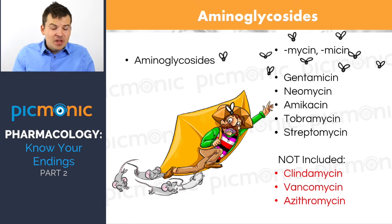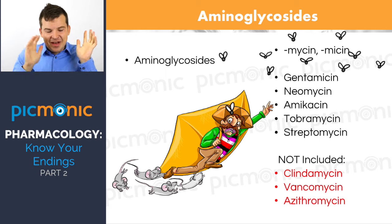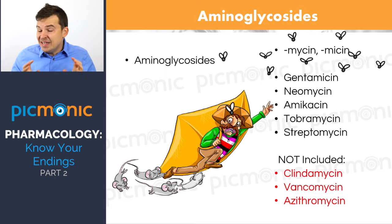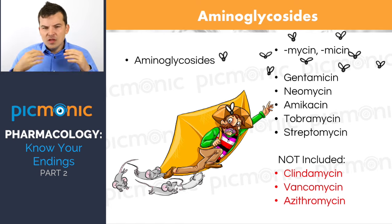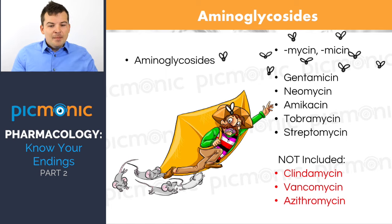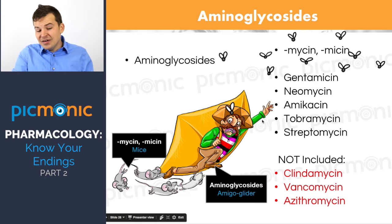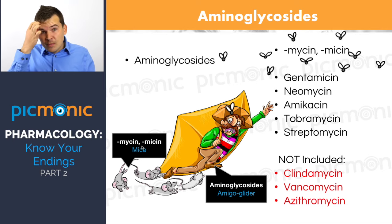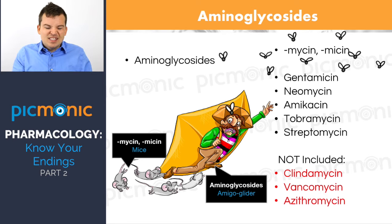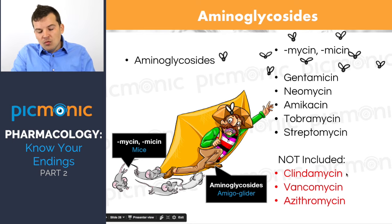The next class is aminoglycosides. A lot of students freak out when asked to name them, but they're actually easy to remember. When I say aminoglycosides, the first thing you should think about is 'mycin' — spelled with a Y. We've got our 'amigo glider' character with mice for mycin to help you remember the class.